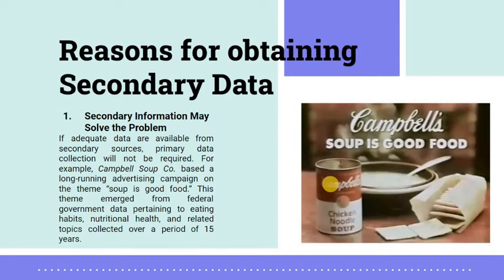What are the reasons why we have to obtain secondary data? First, secondary information may help solve the problem. If adequate data are available from secondary sources, primary data collection will no longer be required. For example, Campbell Soup Company based their long-running advertising campaign on the theme 'Soup is Good Food.' This theme emerged from federal government data — research conducted by the government pertaining to eating habits, nutritional health, and related topics — collected over a period of 15 years. It cannot be disputed because it was the government that conducted this research, and for Campbell Soup's case, they did not need to conduct their own research.